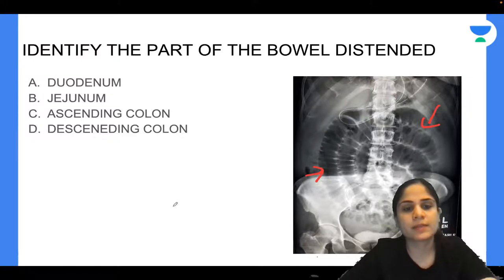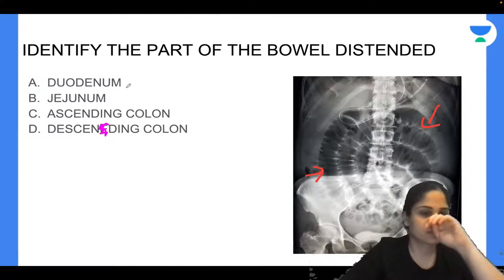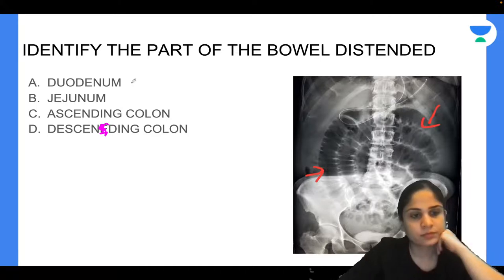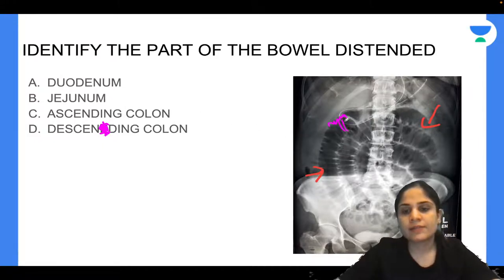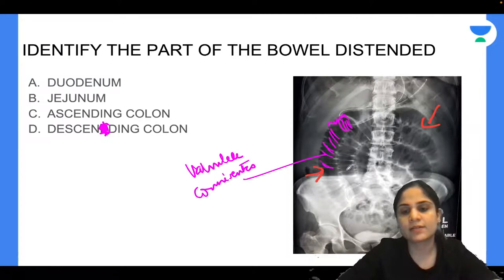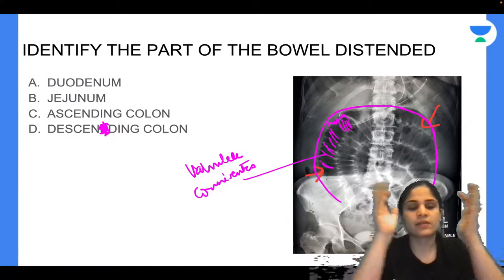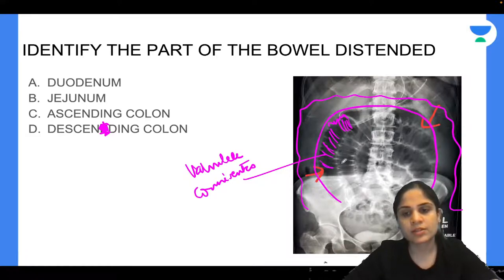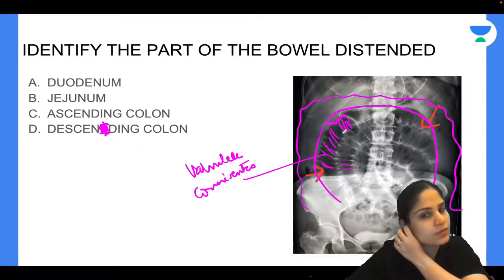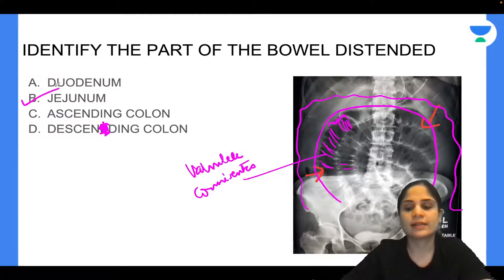Identify the part of bowel that is distended. The feathery appearance of valvulae conniventes (plicae circulares) is seen, and the dilated bowel is in the center of the abdomen — indicating small bowel obstruction. If bowel distension is on the periphery, it is large bowel obstruction. This is the jejunum that is dilated.